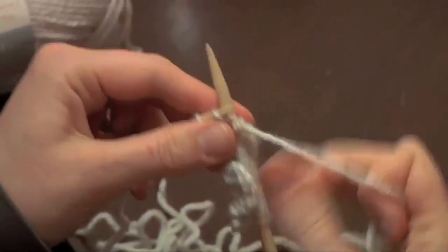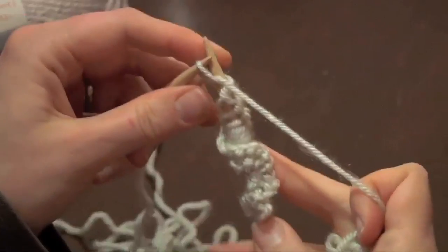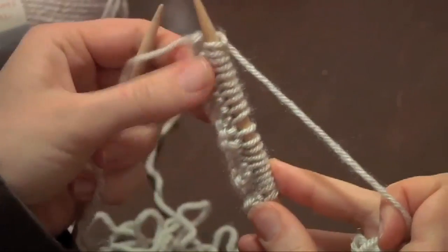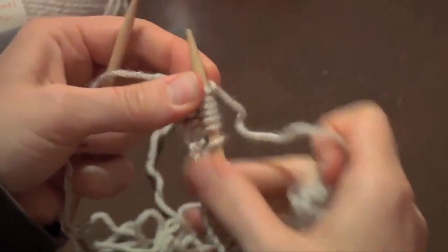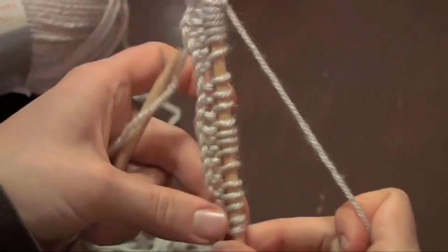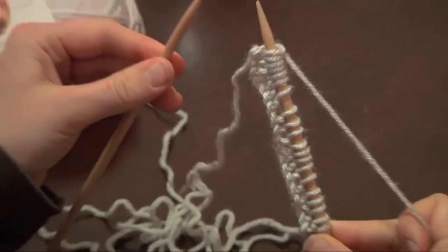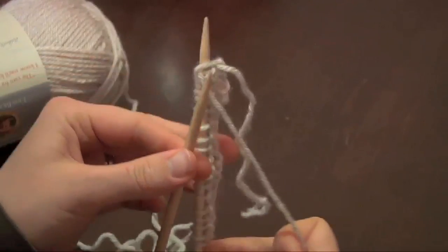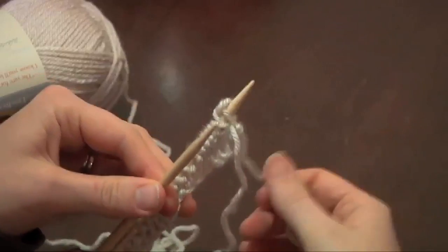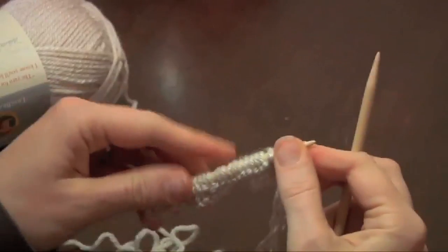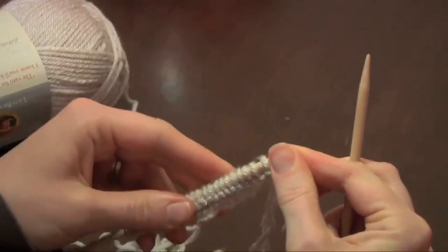Once you reach the end of your 20 stitches, you're going to pull all of your stitches straight, and this is what they should look like. And you're going to want to count and make sure that you still have 20 stitches on there. Then, what you're going to do is take your right hand needle, transfer it to your left hand, take your left hand needle, transfer it to your right hand. And you're going to do the same process all over again.